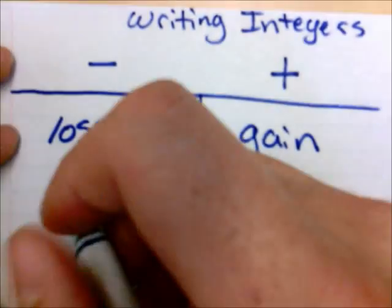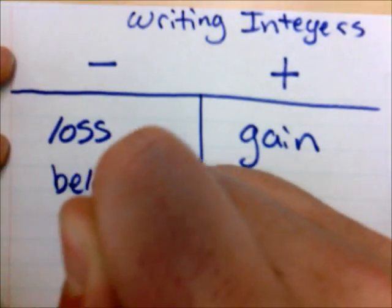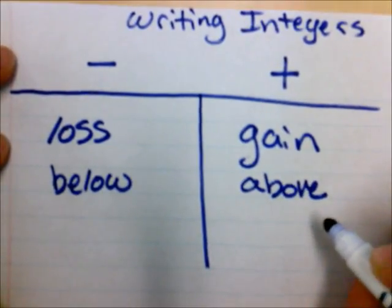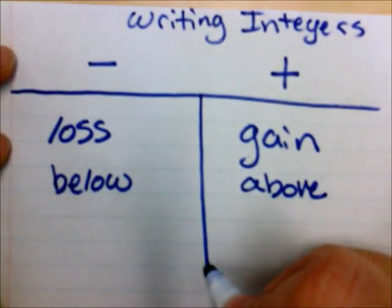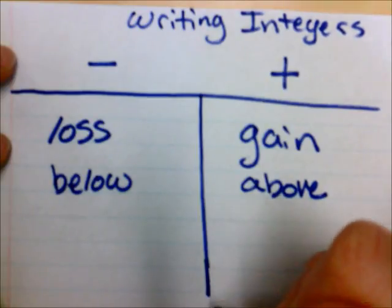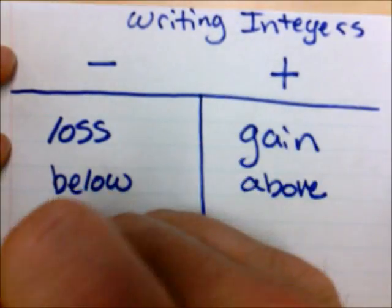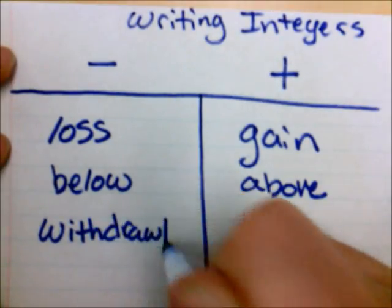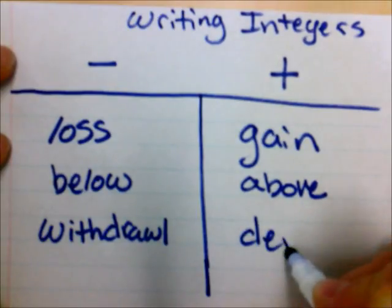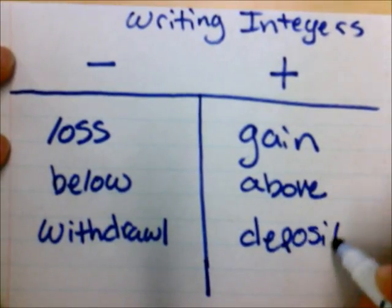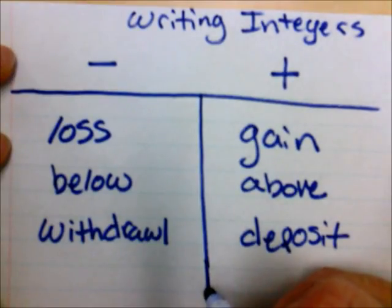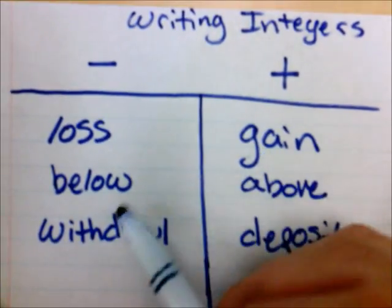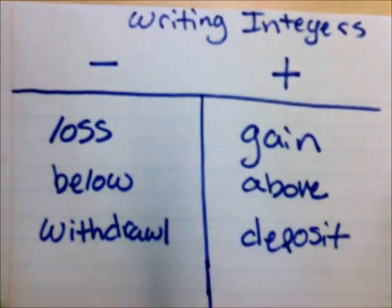You have a ton of these. If we're talking about below sea level or above sea level, that one works. If we're talking about a bank — and I asked my students about if they have a savings account or not — for a negative, it would be a withdrawal. And for a positive, it would be a deposit.